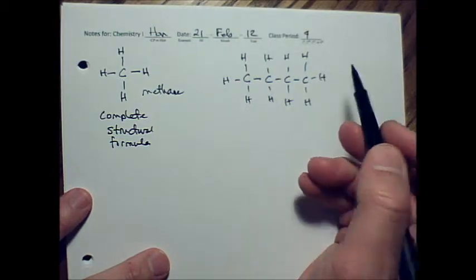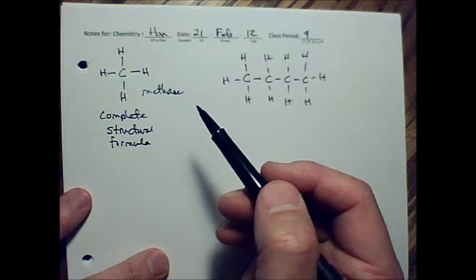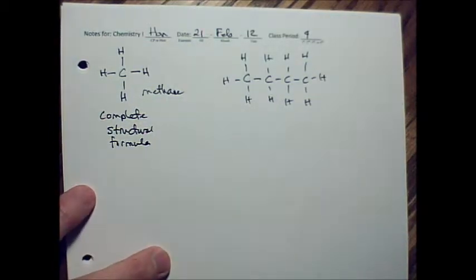You have to memorize the prefixes for naming these. So one carbon is meth, two is eth, three is prop, of course, three is prop, and then four is but.